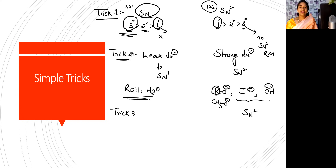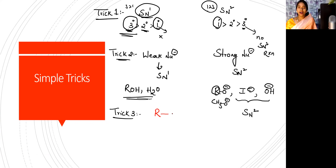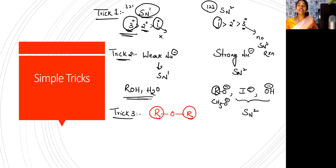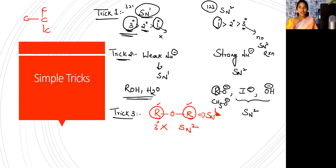Trick number three is when you are doing a reaction with respect to ether. The general formula of ether is R-O-R. Two alkyl groups are present. When you see these two alkyl groups, immediately identify whether any tertiary carbon is there. A carbon which is surrounded by three other carbons is a tertiary carbon. Whenever a tertiary carbon is present in either alkyl group, it involves SN1 reaction. But if there is no tertiary in any one of the alkyl groups, then it involves SN2.